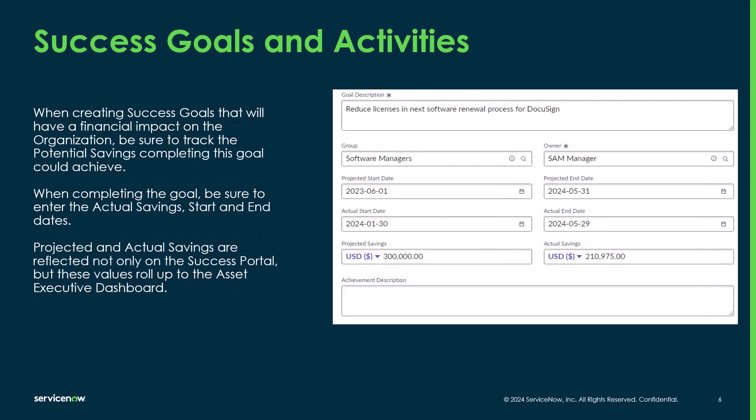When creating success goals that have a financial impact on the organization, you want to be sure to track the potential savings that can be achieved by completing this goal. When completing the goal, you want to make sure you enter your actual savings and the actual start and end dates. Projected and actual savings are reflected not only on the Success Portal, but the values also roll up to the asset executive dashboard.